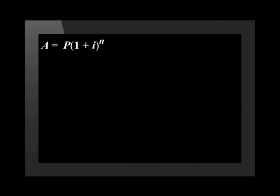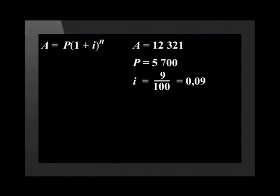We will use the compound interest formula in this question: a equals p multiplied by open bracket 1 plus i close bracket to the power of n. With a equal to 12,321 rand, p equal to 5,700 rand and i equal to 9 divided by 100 which equals 0.09.